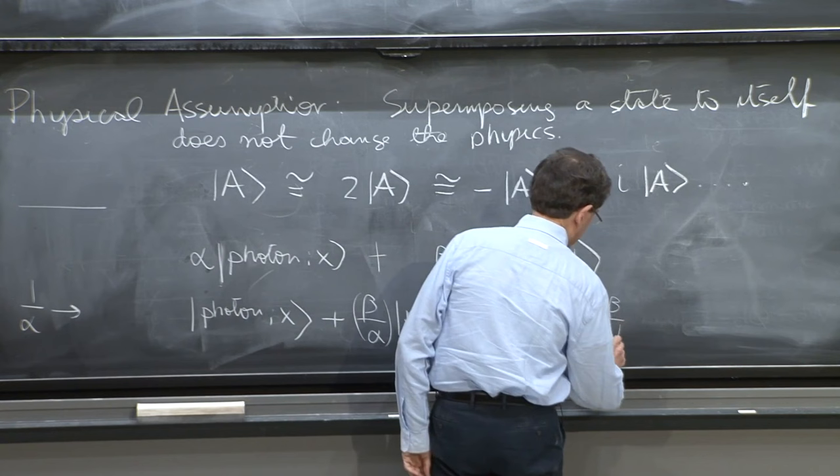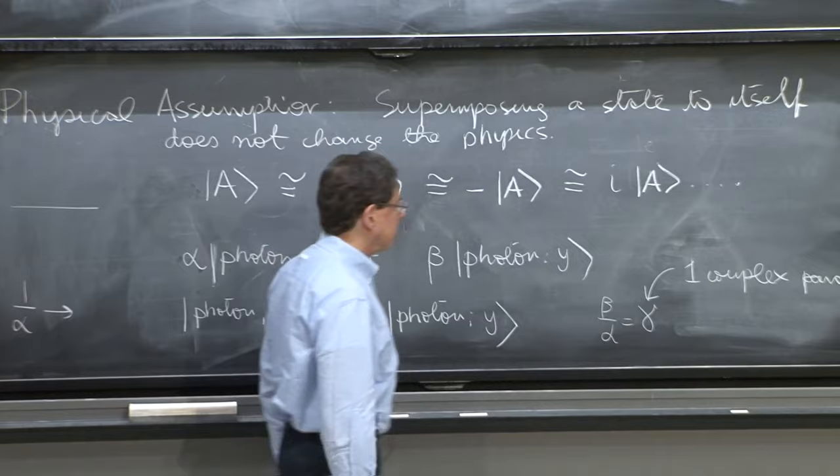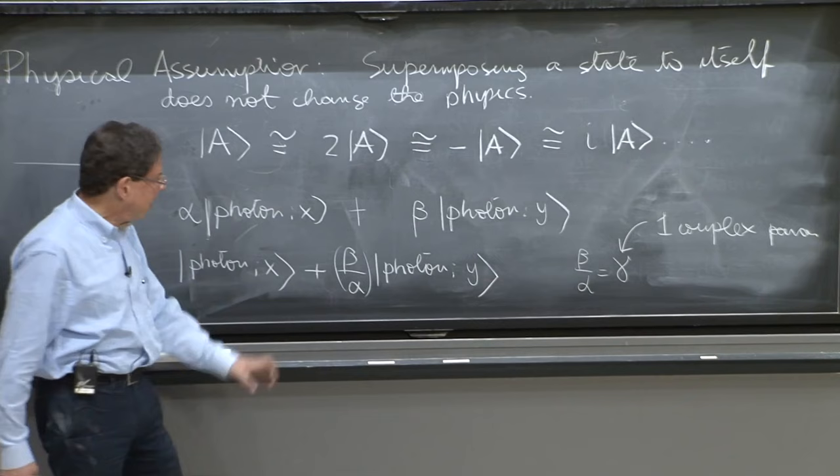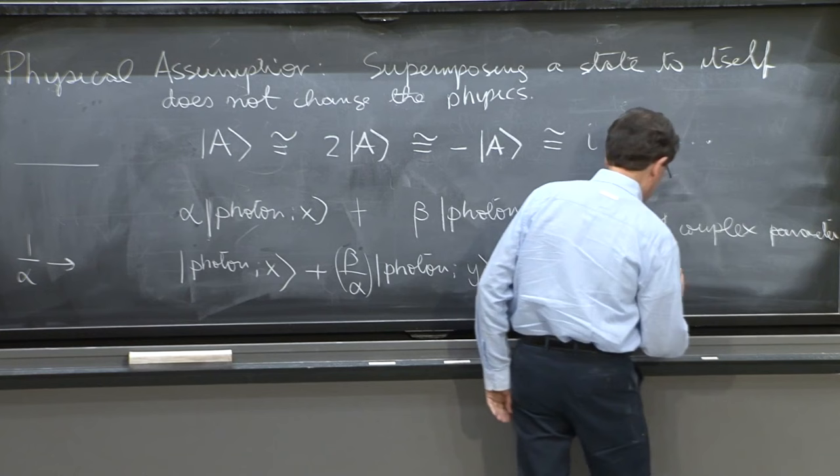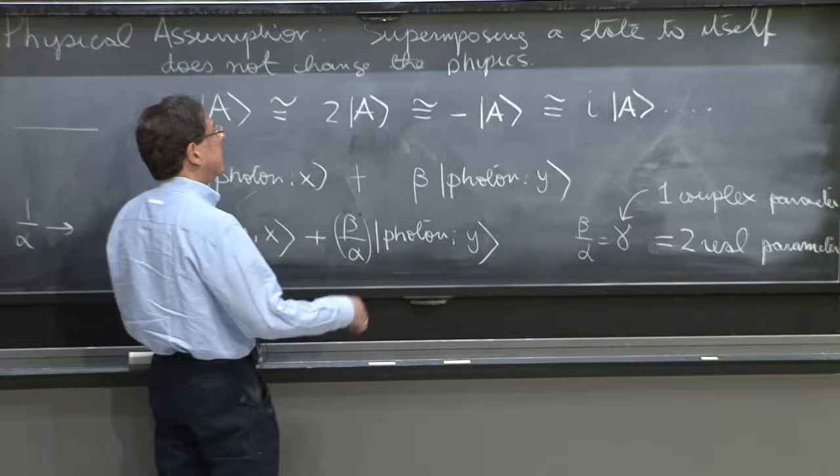And if all the physics is contained in that state, I must look at how many parameters it has. It still looks like there's two numbers here, but only the ratio appears. So if you call beta over alpha the number gamma, it's just one complex parameter. And therefore, thanks to this assumption, you now get that the most general photon polarization state has just one complex parameter, or equivalently two real parameters.